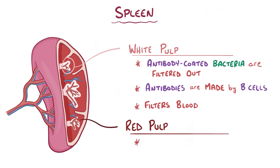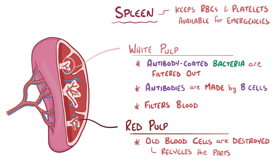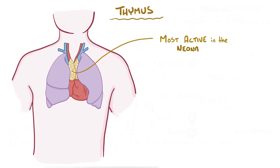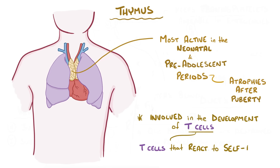The red pulp of the spleen is where old and defective blood cells are destroyed, and their parts — the hemoglobin, the heme chain, and the iron — are either broken down or recycled. The spleen also keeps red blood cells and platelets available in case they're suddenly needed by the body, making it an organ that's got your back in an emergency. Another lymphoid organ is the thymus, which is in the upper part of the chest just below where a necklace might sit. The thymus is most active in the neonatal period and pre-adolescent years, then slowly atrophies and gets replaced by fat after puberty. It's involved in the development of T cells, making sure that any T cells that react to self-antigens — antigens normally found in the body — are promptly destroyed.